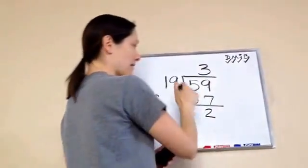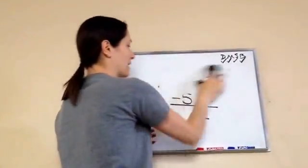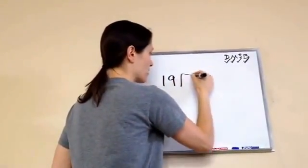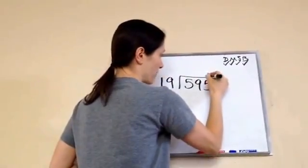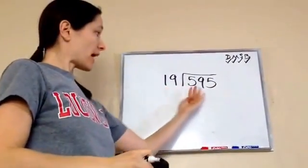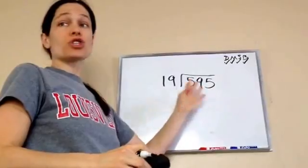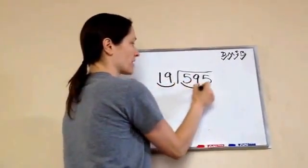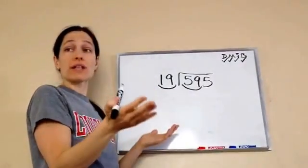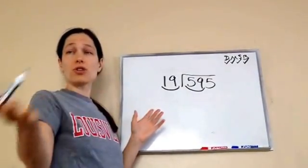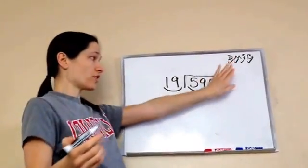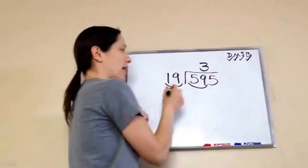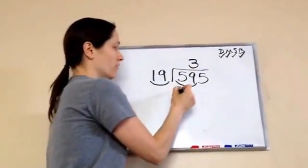Now let's take it just a little bit harder — 19 into 595. I have a 2-digit number and a 3-digit number, but we're still going to use the same trick starting with the first digits. We already know from working with 59 that our first number is 3. So let's do 19 times 3 — that's 57.